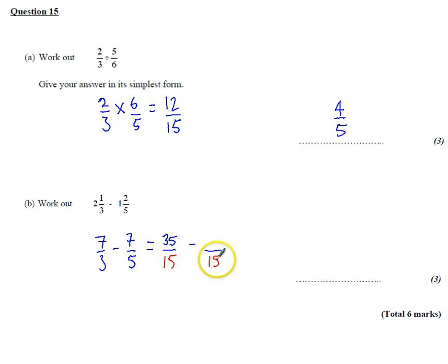And from 5 to 15 it was 3 times bigger. So 3 times 7 is 21. And then that gives me 35 minus 21 is 14 fifteenths. And that's it, we're done.